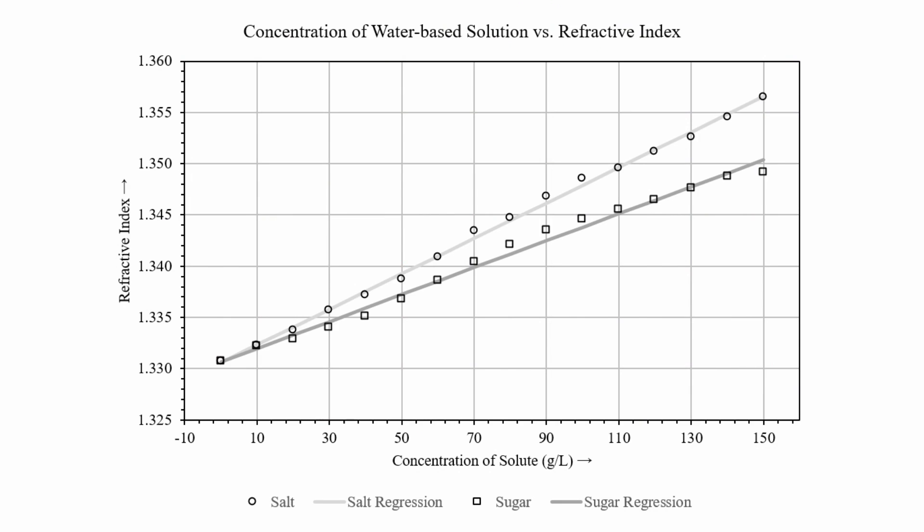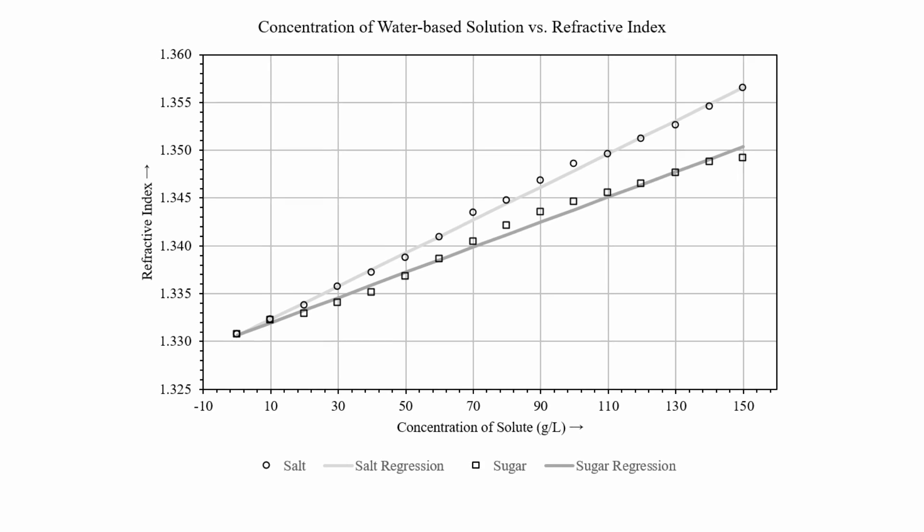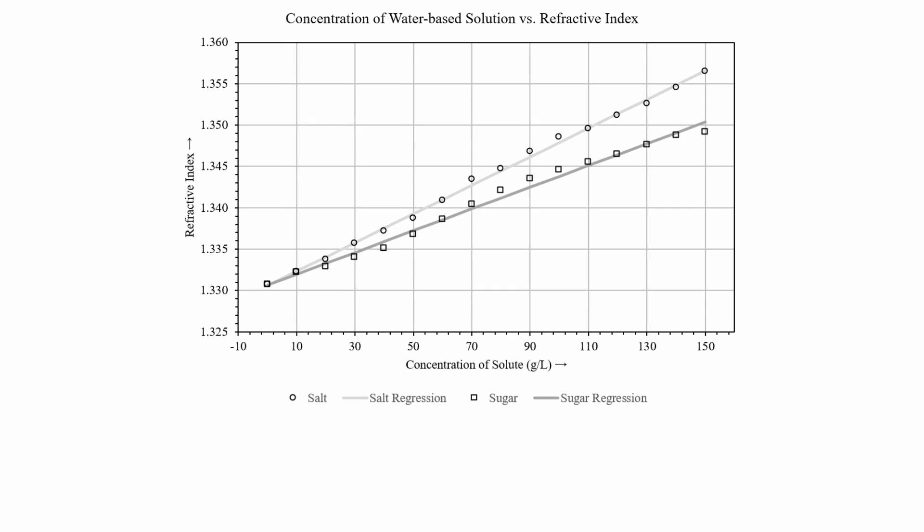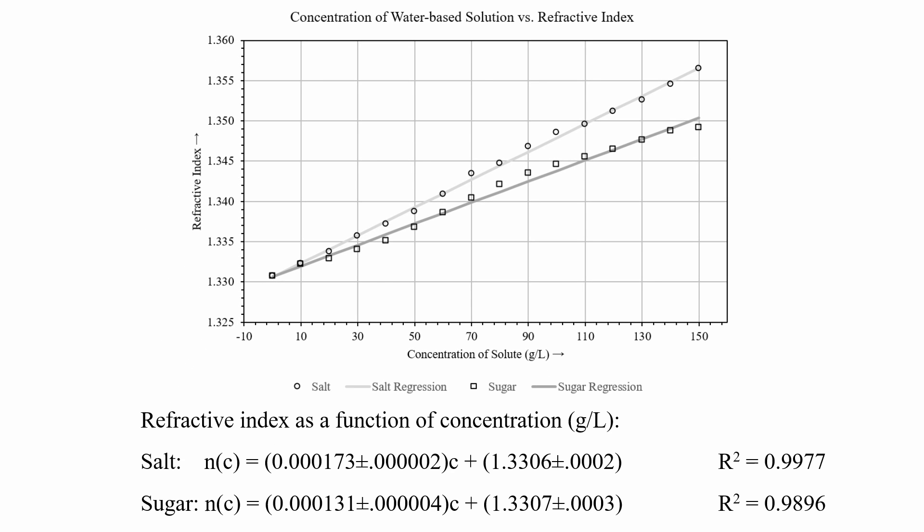The results are summarized in the following graph. This compares the refractive index of salt and sugar at various concentrations in water. As you can see, there's a weak and direct correlation, with the salt having a slightly stronger correlation.